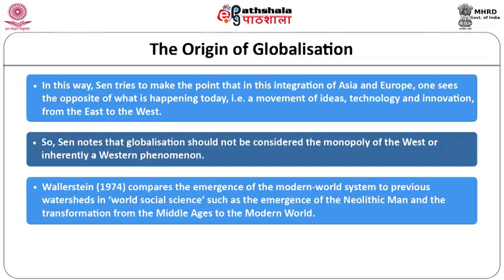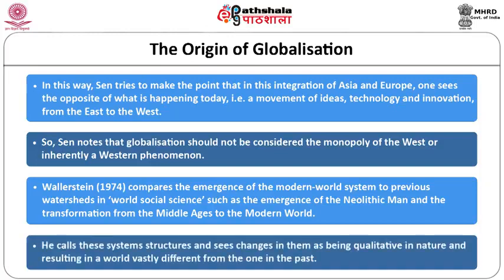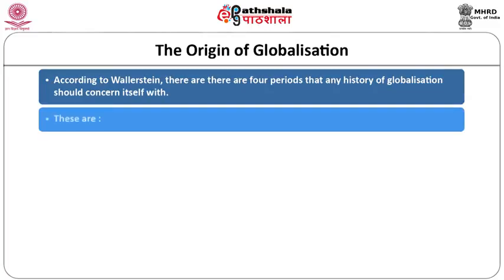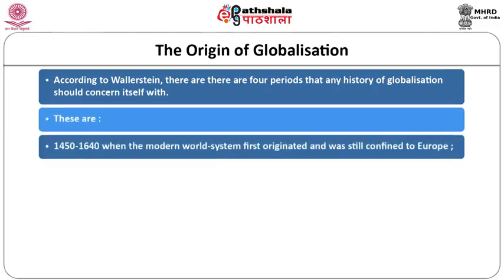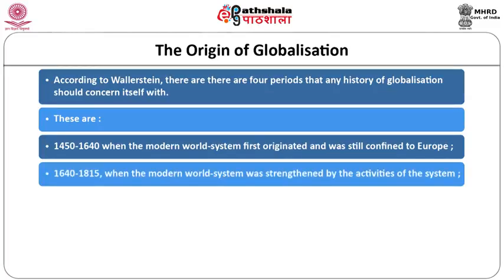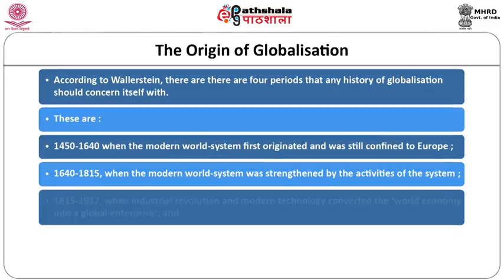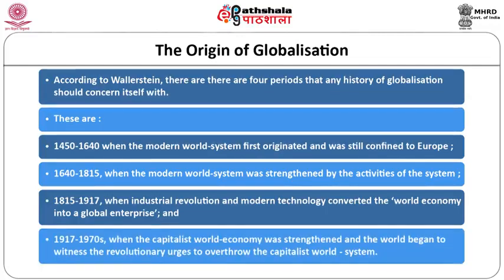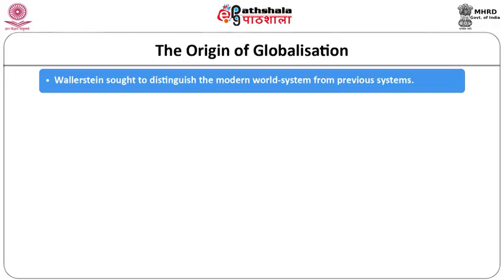Wallerstein compares the emergence of the modern world system to previous watersheds in world social science, such as the emergence of Neolithic man and the transformation from the Middle Ages to the modern world. According to Wallerstein, there are four periods: 1450–1640, when the world system first originated in Europe; 1640–1815, when it was strengthened; 1815–1917, when the Industrial Revolution converted the world economy into a global enterprise; and 1917–1970s, when the capitalist world economy was strengthened and revolutionary urges to overthrow it emerged.